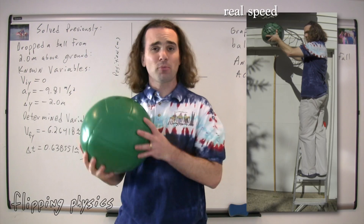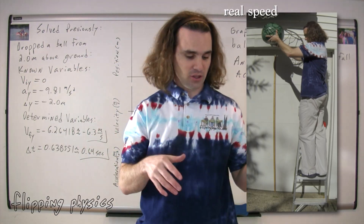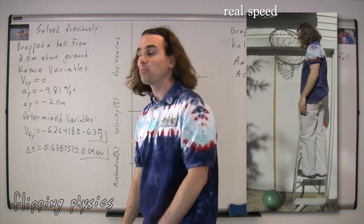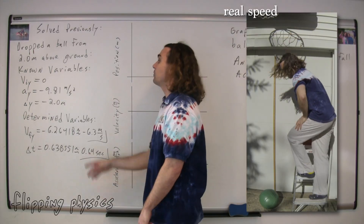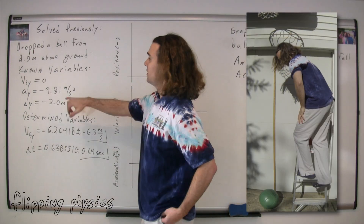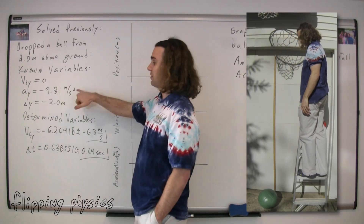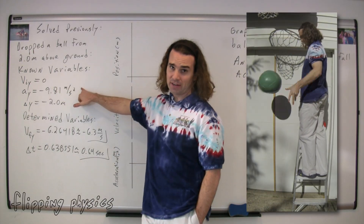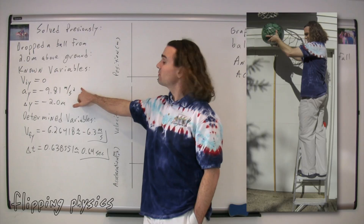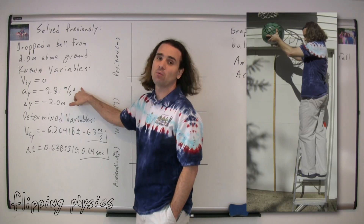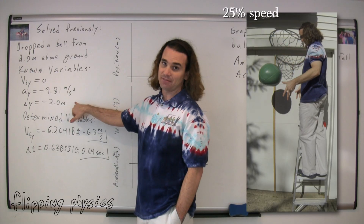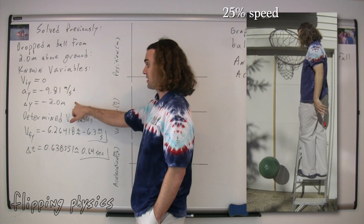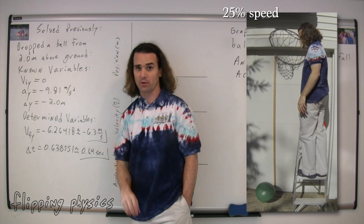Where's my calculator? In our previous lesson, we took the medicine ball and we dropped it from a height of 2.0 meters, and we knew the initial velocity in the y direction was equal to zero. The acceleration in the y direction, because it was in free fall, was negative 9.81 meters per second squared, and the displacement in the y direction was negative 2.0 meters, negative because it was going down.